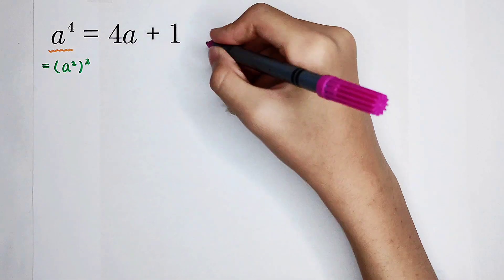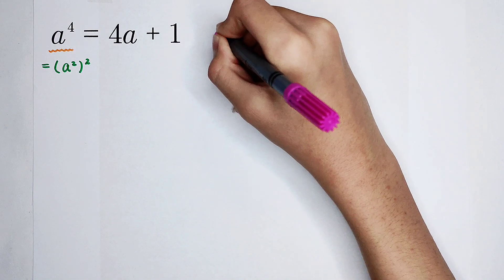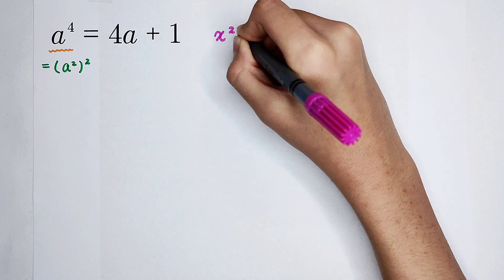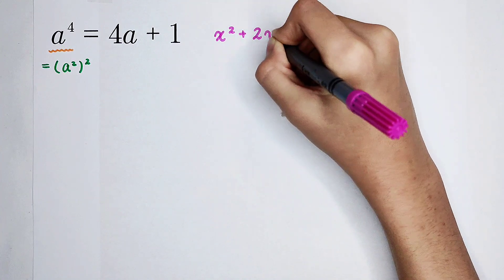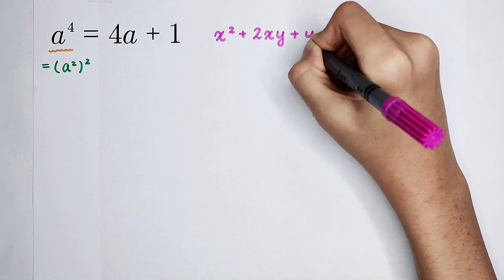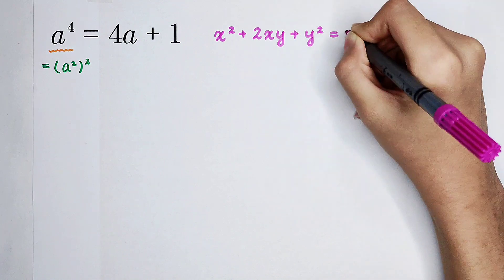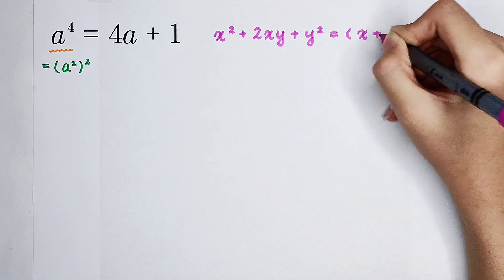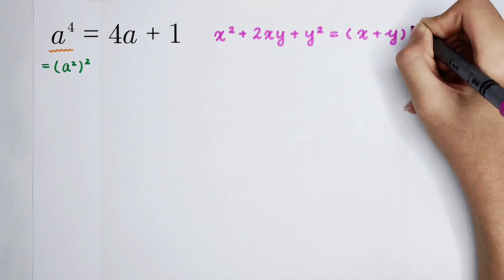That is, x squared plus 2 times xy plus y squared is equal to x plus y all squared.